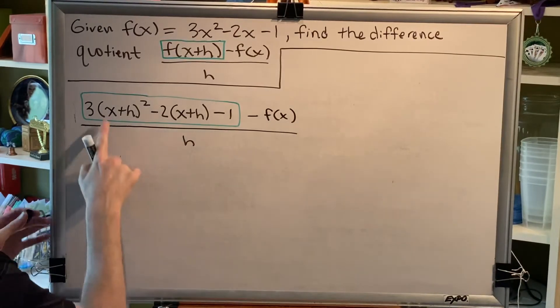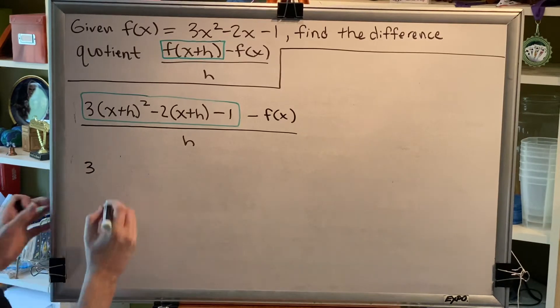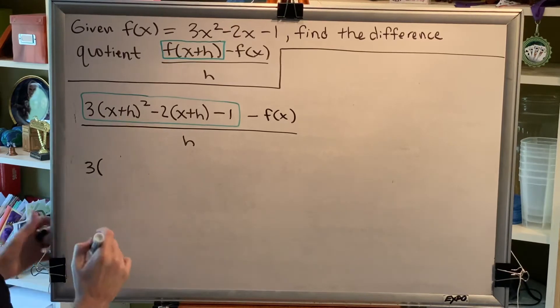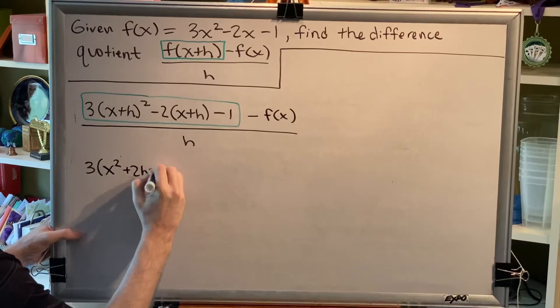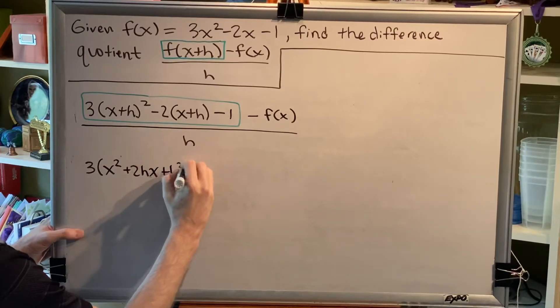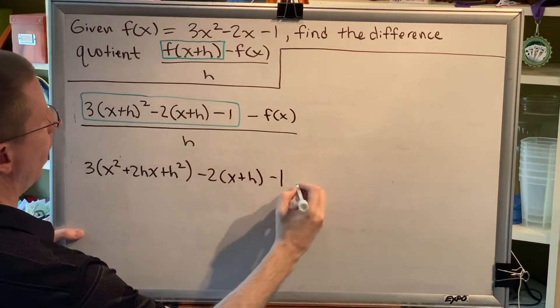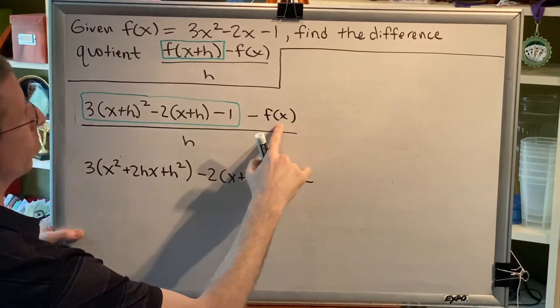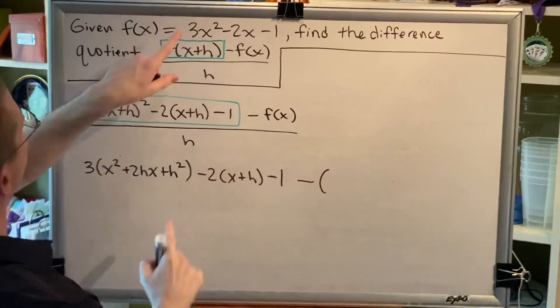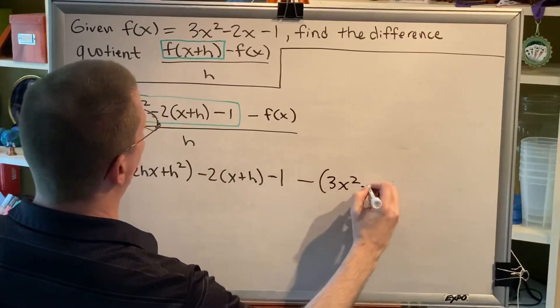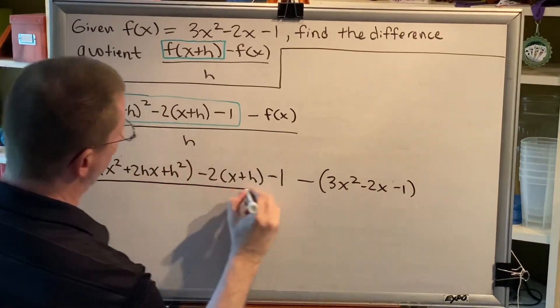We've actually seen x plus h in parentheses squared in previous videos several times. So I'm going to take a shortcut here. Hopefully, you've already memorized this shortcut. x plus h squared is equal to x squared plus 2hx plus h squared. And when I replace this f of x with something new, because it's being subtracted, I have to put it in parentheses. f of x is equal to 3x squared minus 2x minus 1. And all of this has to be divided by h.